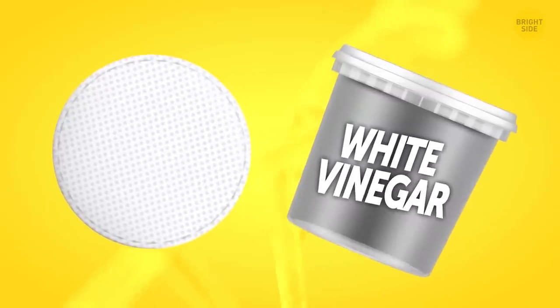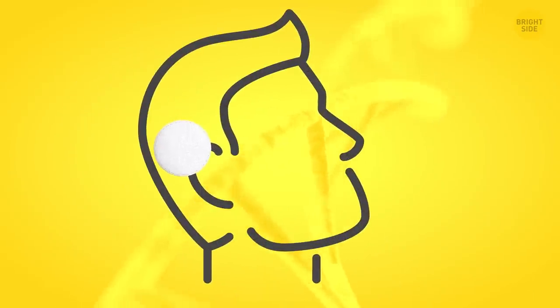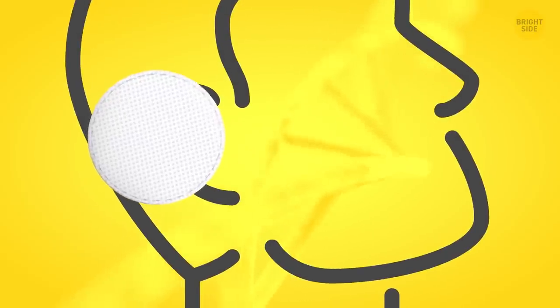Before you shower, take a cotton pad and dip it in white vinegar. Rub it behind your ears to get rid of sebum and nasty germs. Then just go to the shower and wash as usual. Simple as that.